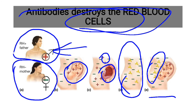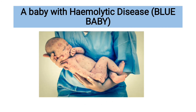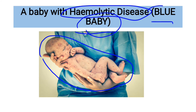Hence, they make the young one die. In some cases, the young one may come out alive with some blue spots on the body. This is an indication that the young one is suffering from hemolytic disease of the newborn. People used to refer to them as the blue babies, due to the blue spots on their bodies, as you can see in this diagram.